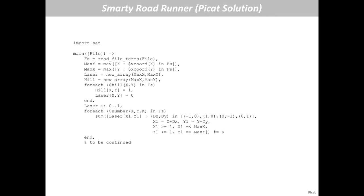This is a CSP. First, get the grid size (maximum X and maximum Y). Create a binary laser matrix: 0 means no laser installed, 1 means laser installed. Enforce that for each numbered black cell, the sum of laser variables on its neighbors equals the given number. Then create another matrix called group: 0 means the cell is covered by a laser beam, 1 means it is safe and part of the route.